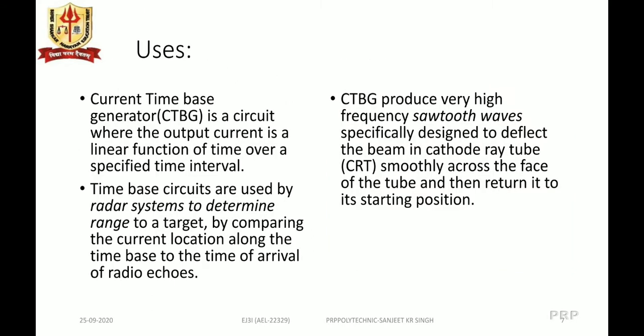Current time-base generators are used in circuits where the output current is a linear function of time over specified sweep time intervals. They are used by radar systems to determine the range of a target by comparing the current location along the time base to the time of arrival of radio echoes. They also produce very high frequency sawtooth waves to deflect the beam in a cathode ray tube (CRT) smoothly across the face of the tube and return it to the starting position.